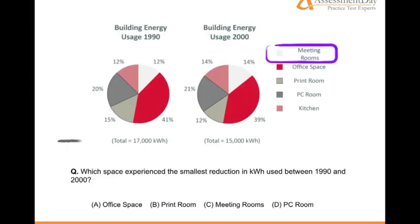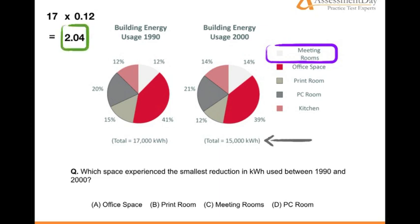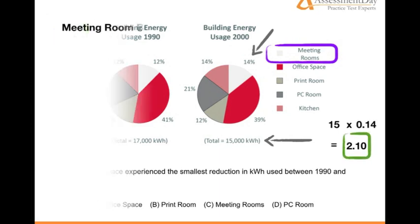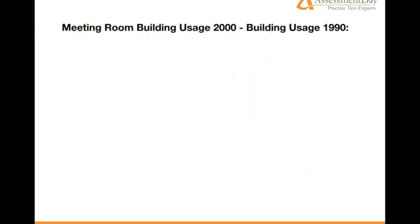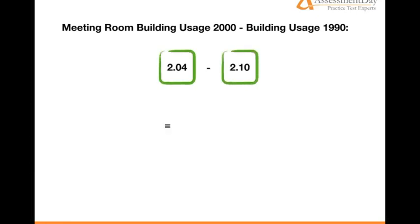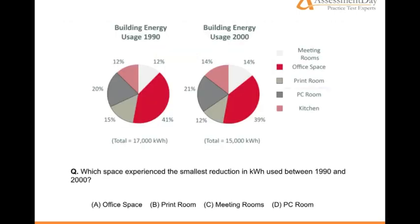Again with Meeting rooms: 17 multiplied by 0.12 equals 2.04. 15 multiplied by 0.14 equals 2.10. So 2.04 minus 2.10 equals negative 0.06.